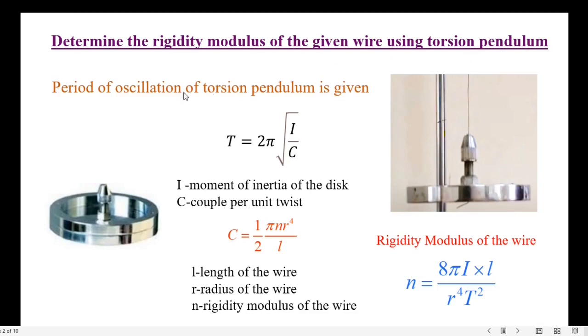The period of oscillation of a torsion pendulum is obtained by using the formula T equals 2π times the square root of I over C, where I equals the moment of inertia of the disk and C equals the couple per unit twist.